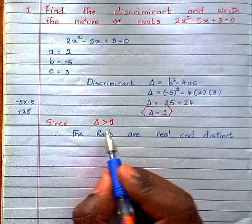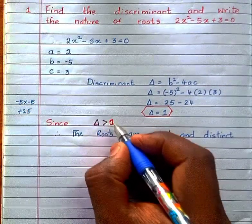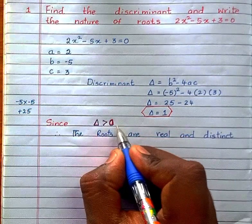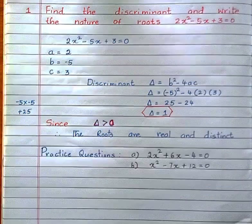A quadratic equation will have two roots. Those two roots are real and distinct because discriminant is greater than 0.